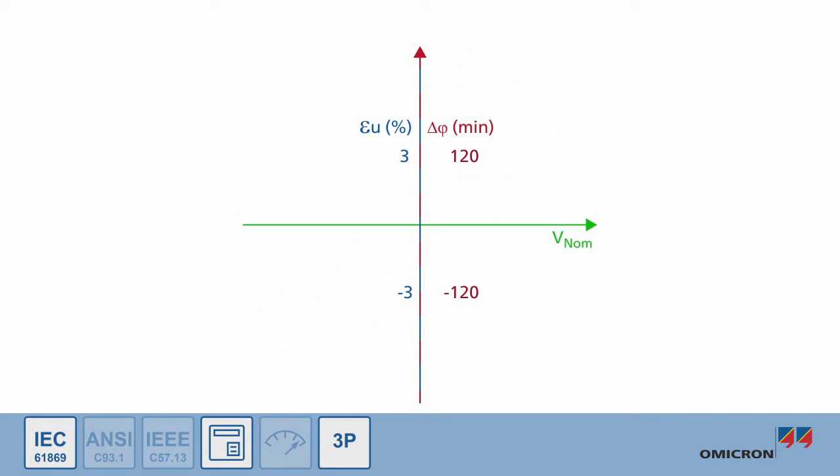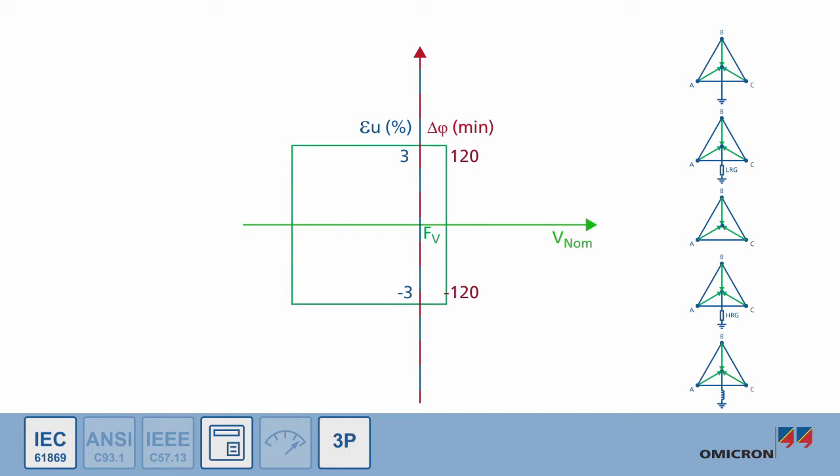The operating range is limited by undervoltage and overvoltage conditions. The upper limit of the operating range is an overvoltage that is defined by nominal voltage times the rated voltage factor. Depending on the system grounding and the applied earth fault protection, typical rated voltage factors are 1.2, 1.5, and 1.9.